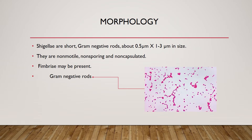Regarding morphology, Shigella are short gram-negative rods, about 0.5 micron by 1 to 3 microns in size. They are non-motile, non-sporing, and non-capsulated, but fimbriae may be present. This picture shows the Shigella bacillus, which is gram-negative and rod-shaped.